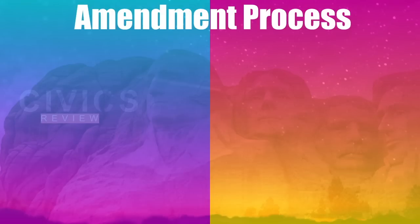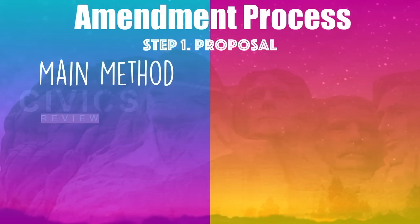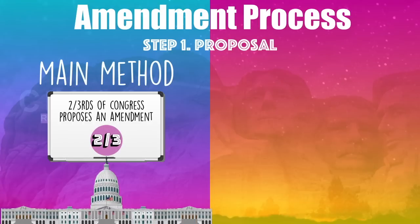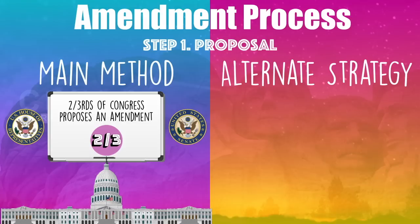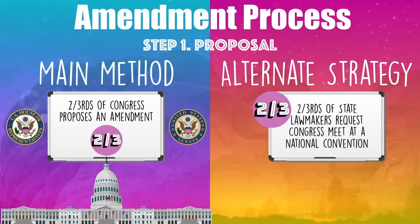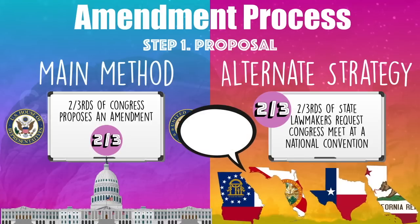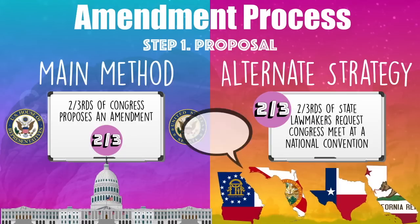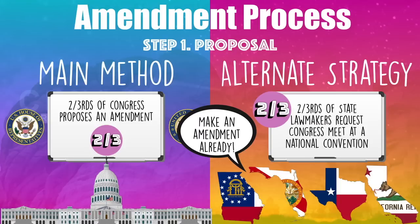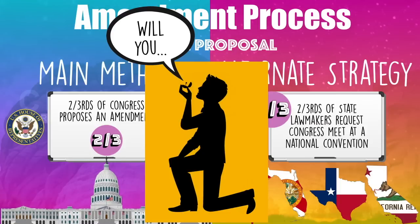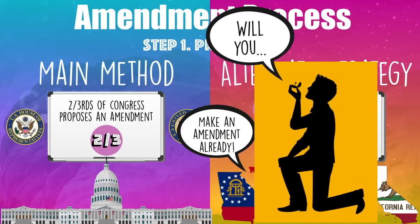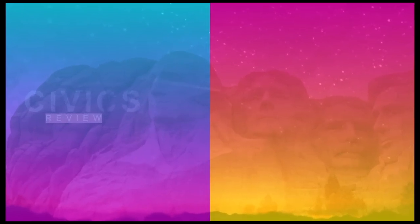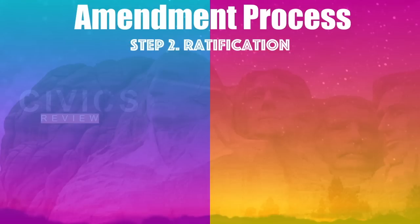The amendment process is a two-step process, and the first step is called proposal. The main method is for two-thirds of Congress to propose a change to the Constitution — that means two-thirds of the House and two-thirds of the Senate need to be on the same page. This can be really difficult to do, so they included an alternative strategy: if two-thirds of the state lawmakers call a national convention, then Congress must meet to discuss making a change to the Constitution. They wanted to make sure that if Congress was unwilling, the states could crack the whip and say, it's time to talk about this change. Congress, who proposes this change, cannot accept the change — we need a second party to agree and make something official. When someone agrees and makes something official, we call that ratification, and that's step two.